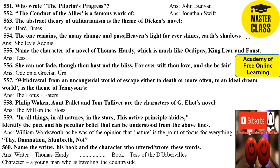554: 'The One remains, the many change and pass; Heaven's light forever shines, Earth's shadows fly' — said by Shelley in his poem Adonais. 555: Name the character of a Thomas Hardy novel much like Oedipus King, Lear, and Faust — answer is Jess. 556: 'She cannot fade, though thou hast not thy bliss, forever wilt thou love, and she be fair' — taken from 'Ode on a Grecian Urn,' written by Keats.